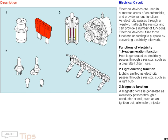Functions of electricity. 1. Heat generation function. Heat is generated as electricity passes through a resistor, such as a cigarette lighter, fuse.